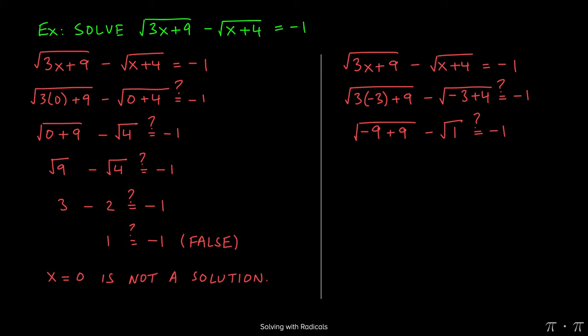Negative 9 plus 9 is 0, so we have the square root of 0 minus the square root of 1, and we're trying to determine if that evaluates to negative 1. Well the square root of 0 is simply 0, and the square root of 1 is just 1. 0 minus 1 does indeed equal negative 1, so we have a true statement. This proves that x equals negative 3 is indeed a solution to the original equation.